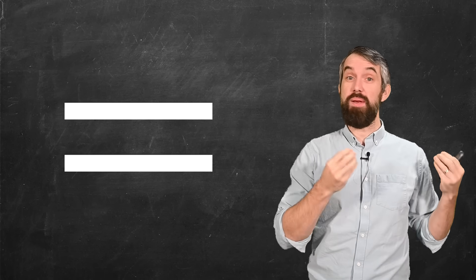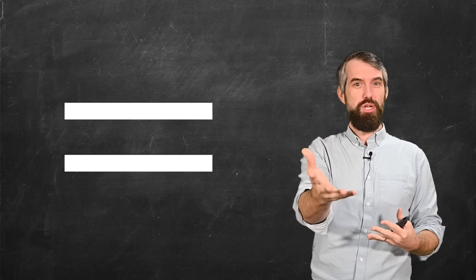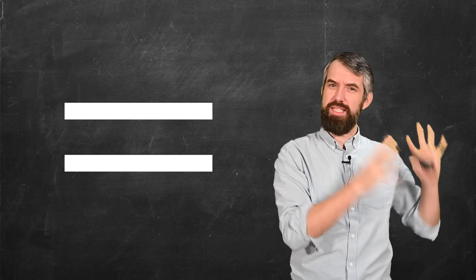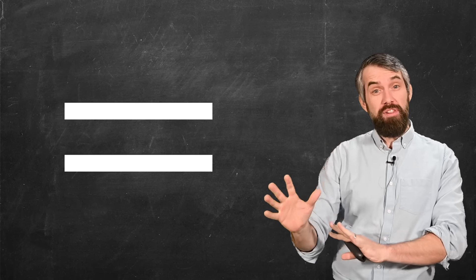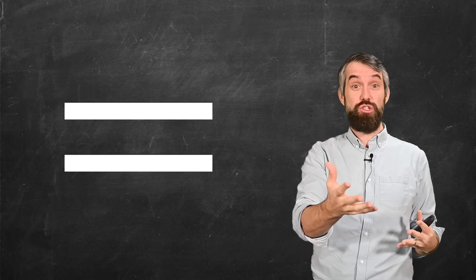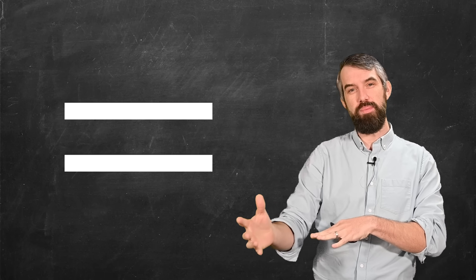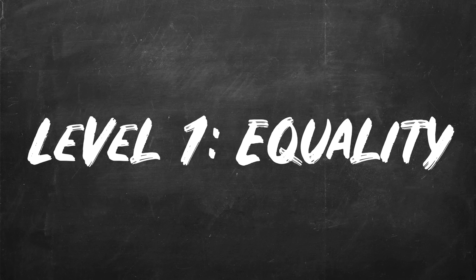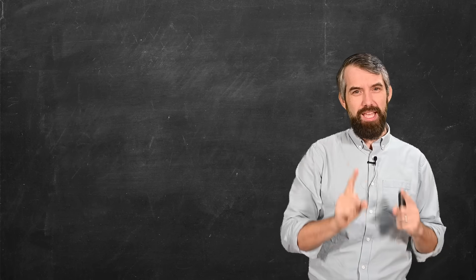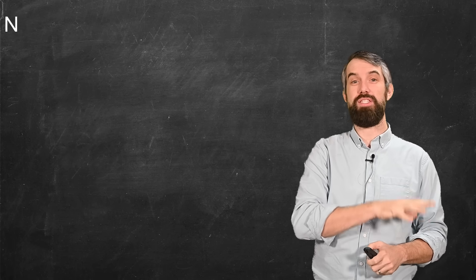Perhaps the central concept in mathematics is that of equality. But the notion of equality, of two things being the same or equivalent in some sense, occurs throughout mathematics and is used in different ways with different symbols. We'll start with level one, the notion of equality you'd expect to see in school. But even there, there are different ways the same equal sign gets used.